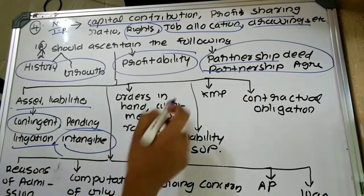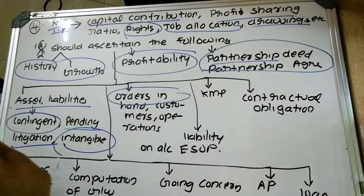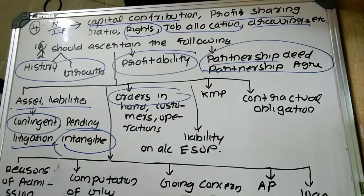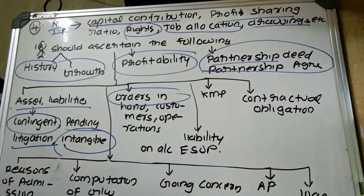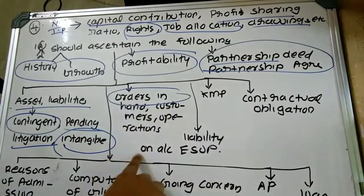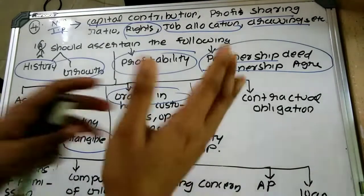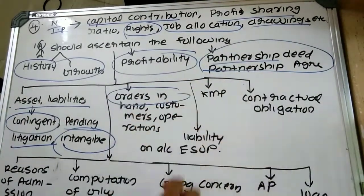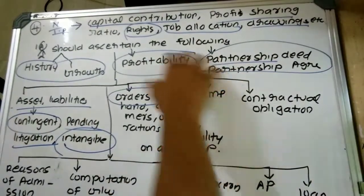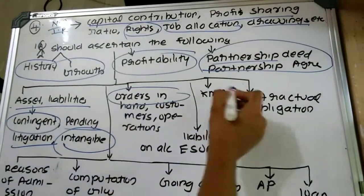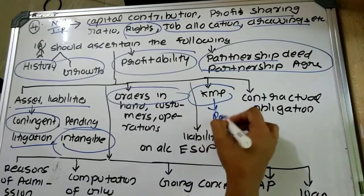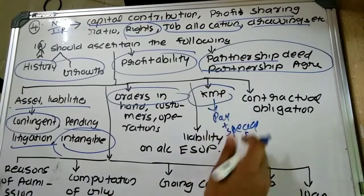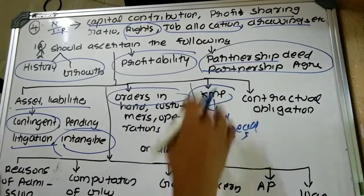The investigating accountant should also obtain understanding of orders in hand to determine whether this firm is a dummy firm or whether they are actually undertaking operations. They should understand orders in hand, existing customers, and operations currently undertaken by the firm. They should also obtain understanding of key managerial persons, including their pay packages and specialized skills—whether they have specialized knowledge in a particular field.